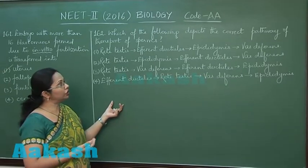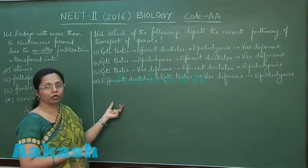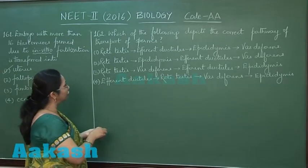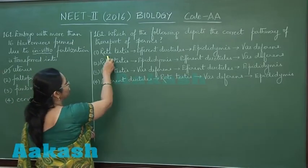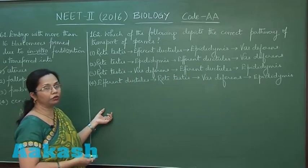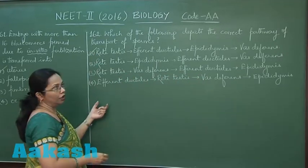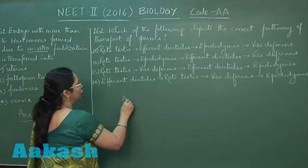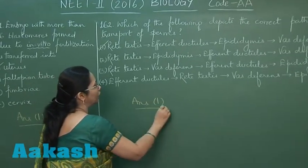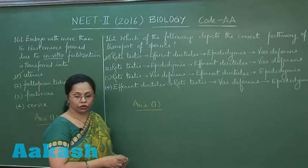The efferent ductules open into the epididymis, which in turn opens into the vas deferens. So the correct pathway is: rete testis → efferent ductules → epididymis → vas deferens. This is the correct answer. Let's move on to question 163.